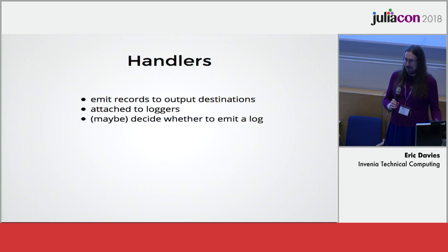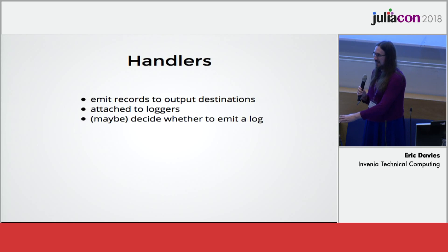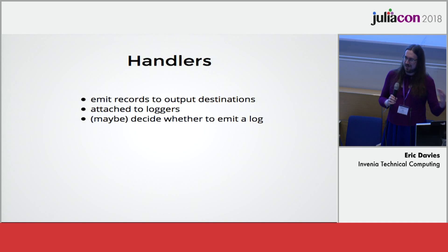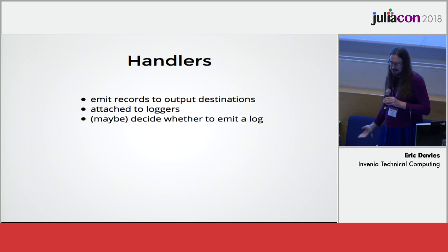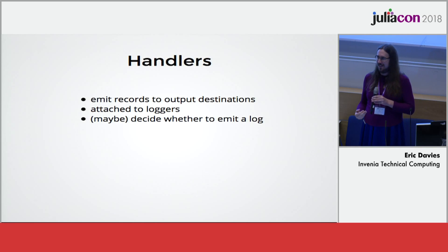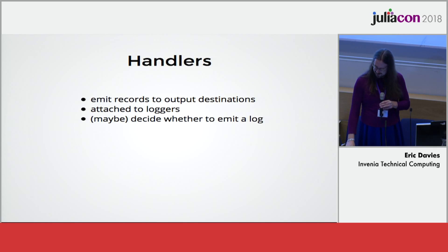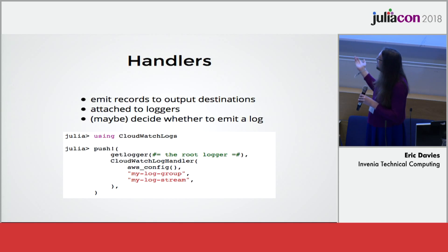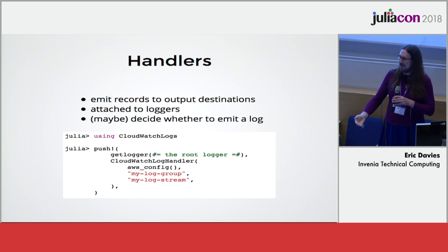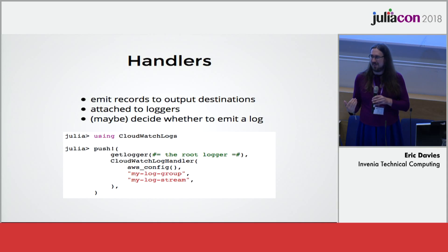Handlers are what receive the record from the logger and send them to some output destination. This is the key difference between Julia's base logging standard lib and Memento — these are separate concerns. Any number of handlers can be attached to any logger, and by default there's one handler attached to the root logger that outputs to the console. They can also filter logs to only certain records. This is using one of the handlers I've built — a CloudWatch log handler — which, in addition to sending output to the console, sends it to CloudWatch Logs, an Amazon Web Services service that lets you index and search logs.